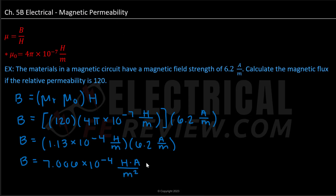We can simplify our units: Henry times amps gives us the unit Weber per meter squared, which simplifies to the unit Tesla. This concludes our video on magnetic permeability. Thank you for watching.